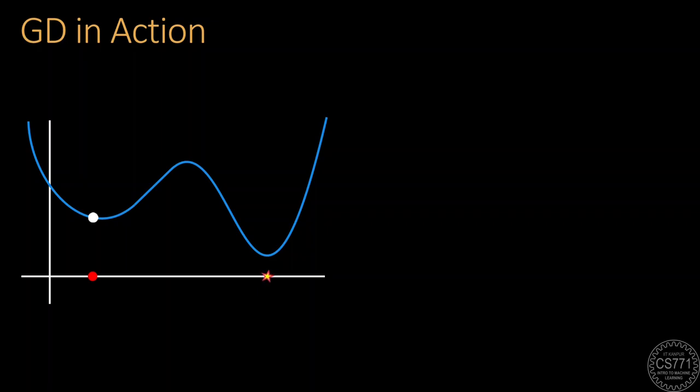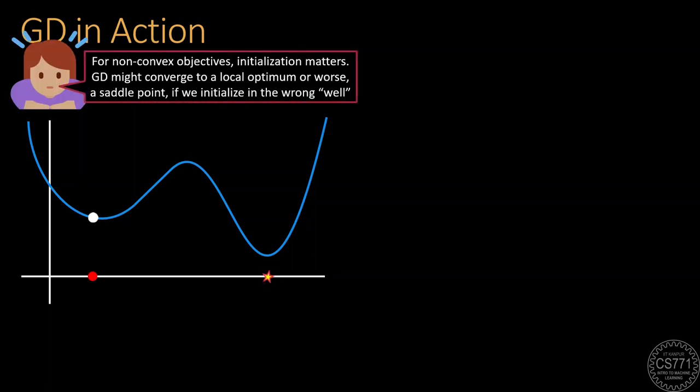Note that GD will converge here since this is a stationary point. You may have noticed that we converged but to the wrong local minimum. This can be blamed on bad initialization. There are clearly two wells in this function surrounding the two local optima. Had we initialized in the correct well as we shall see here, we would have indeed converged to the global optimum in a few iterations.